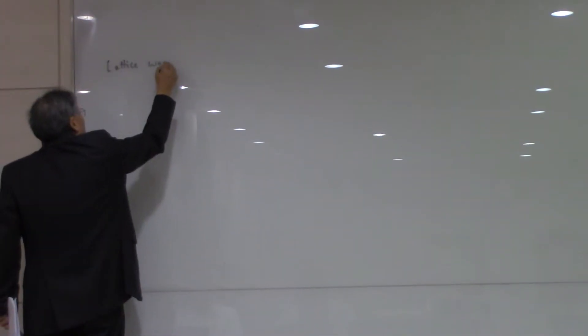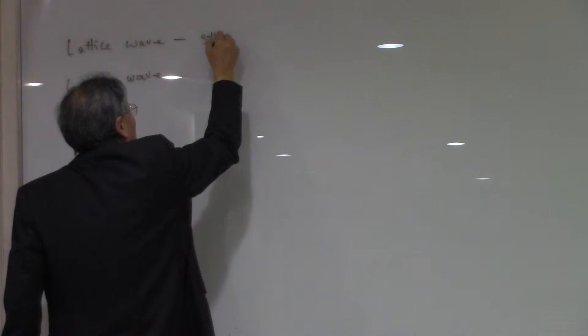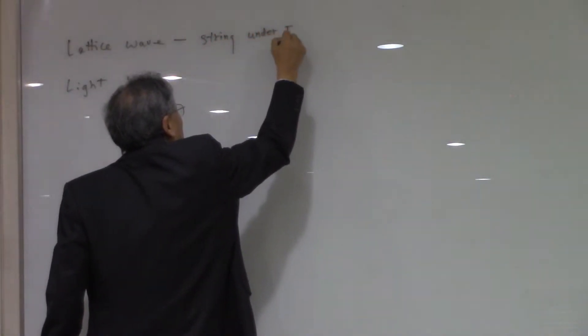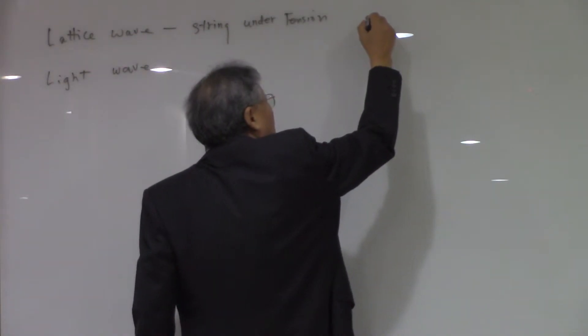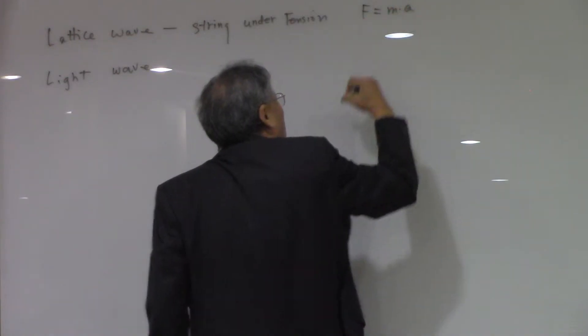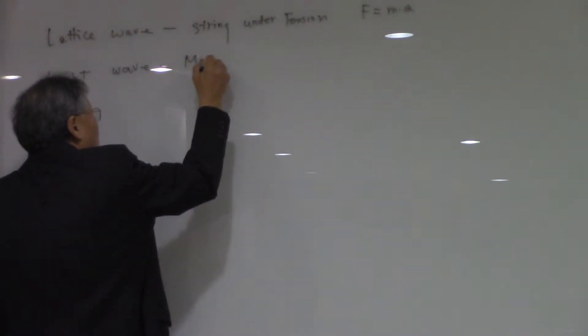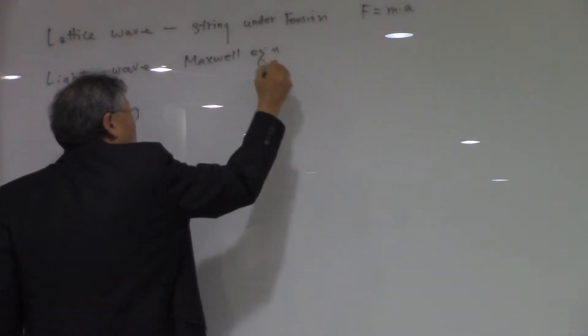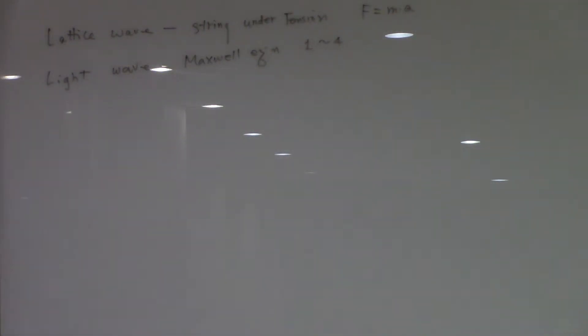Last time we discussed the lightest wave, and we talked about the light wave. For the light wave, we used the model of a string under tension. We applied Newtonian mechanics — F equals ma — to get the wave equation. For the light wave, we used Maxwell's equations, and we just mathematically manipulated the Maxwell equations to get the light wave.